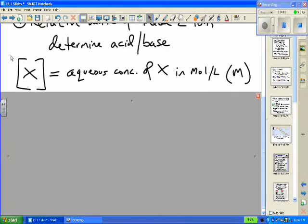Now, here's some symbology you may not be used to. You see X in brackets. X is some species that will be determined later, but the brackets have a specific meaning in chemistry. When you see X in brackets, that means the aqueous concentration of X in moles per liter. And, of course, that is symbolized by capital M, molarity.